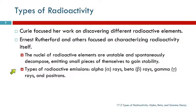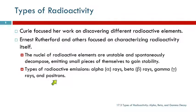The types of radioactive emissions are alpha rays, beta rays, gamma rays, and positrons. These are named after Greek letters alpha, beta, and gamma, and then positrons.